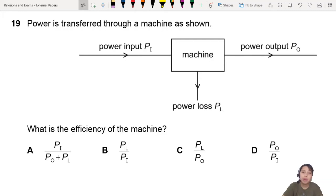Work, energy, power, chapter 6 question. Power is transferred through a machine as shown. So this machine here is the magic that will convert some power to some other form of energy and throw it out. Input, output, and power loss.